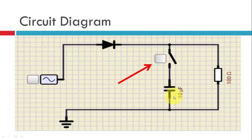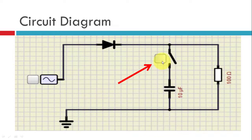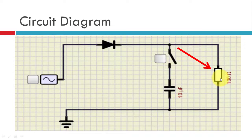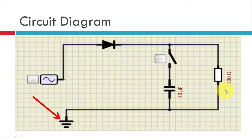This switch can be opened and closed with this particular button. When we press this button the switch gets closed, and when the switch gets closed this capacitor gets connected. When in this particular state the capacitor is not connected in the circuit, so we can see the output with and without the capacitor. Then here we have the capacitor of 10 microfarad which performs the filtering action, and then we have the 100 ohm resistor where we get the output. We need to connect the ground to complete the circuit.